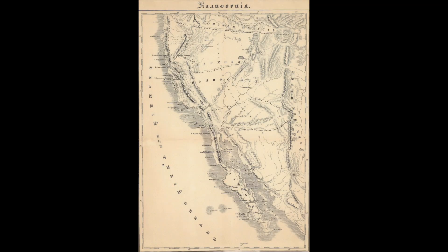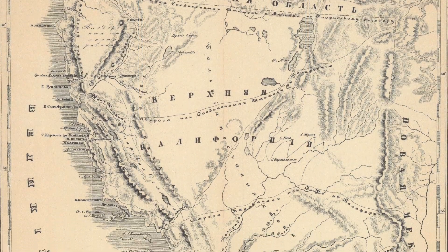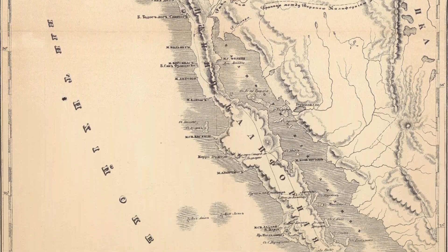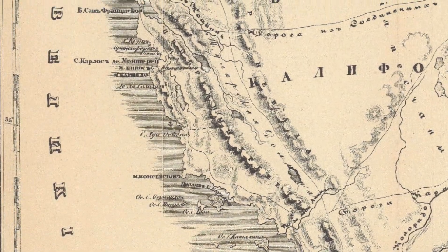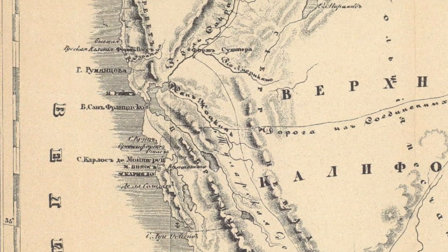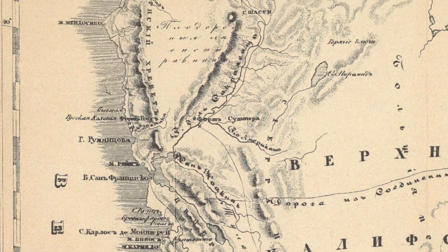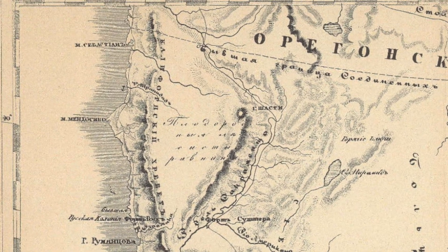Here is an 1840s map of California made by Russian explorers. A lot of people don't realize that outside of Alaska, Russians had gone as far south as Northern California, and explorers had gone even further south — but they didn't make any settlements. This map isn't very accurate, but it does at least get the coastline somewhat correct.